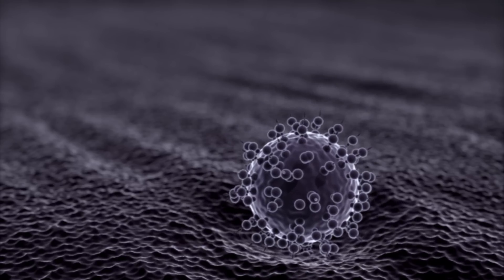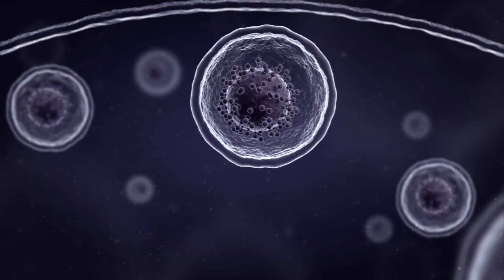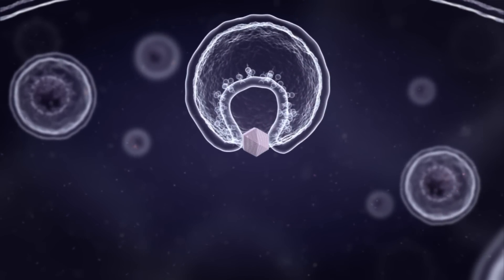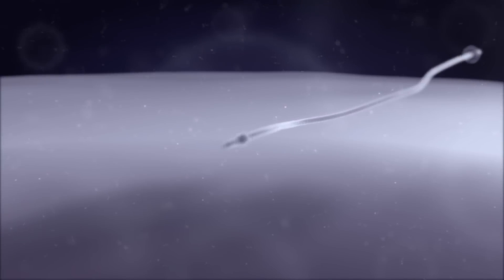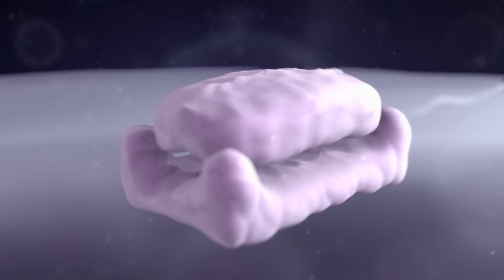The virus then enters the hepatocyte via receptor-mediated endocytosis. Once inside the hepatocyte, the viral membrane fuses with the endosomal membrane, releasing the viral RNA into the cell's cytoplasm. The viral RNA then travels through the cytoplasm to the endoplasmic reticulum, where it is translated by host ribosomes.